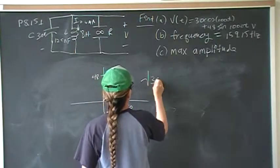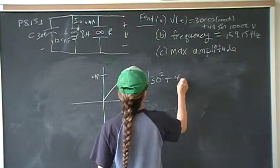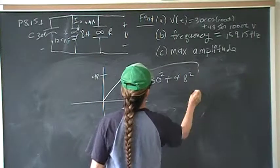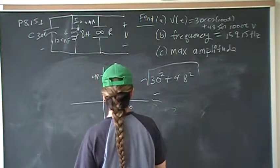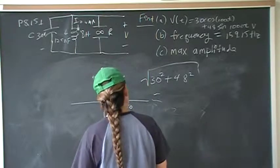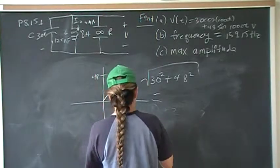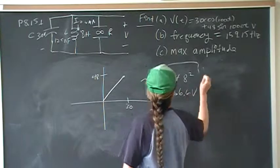So it's going to be 30 squared plus 48 squared. That is going to give you a value of 56.6 volts.